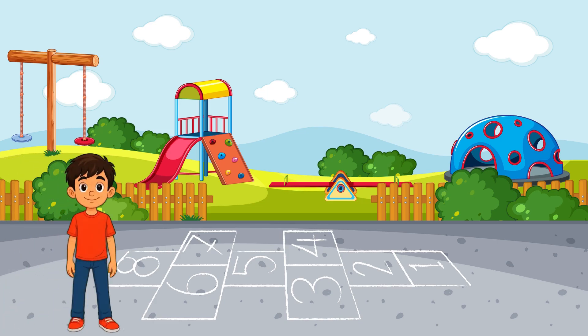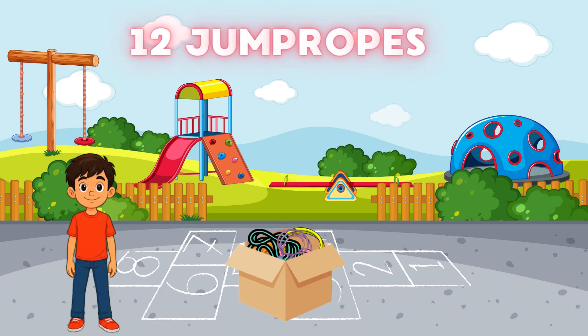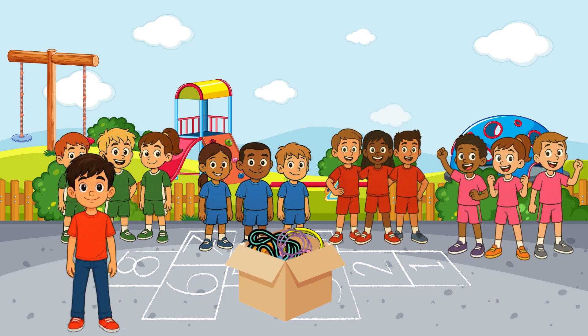It's a bright morning at the playground and we just got a big box of jump ropes, twelve of them. We've got four teams ready to play. How do we make sure every team gets the same number of ropes?